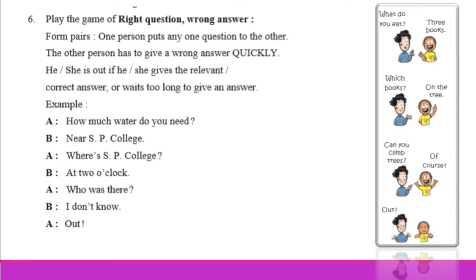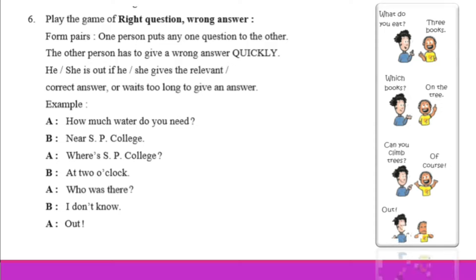For example: A asks, how much water do you need? B replies with an irrelevant answer. Next, A asks again — where is ESP college? B answers: at 2 o'clock. This answer is wrong because it is not relevant to the question.